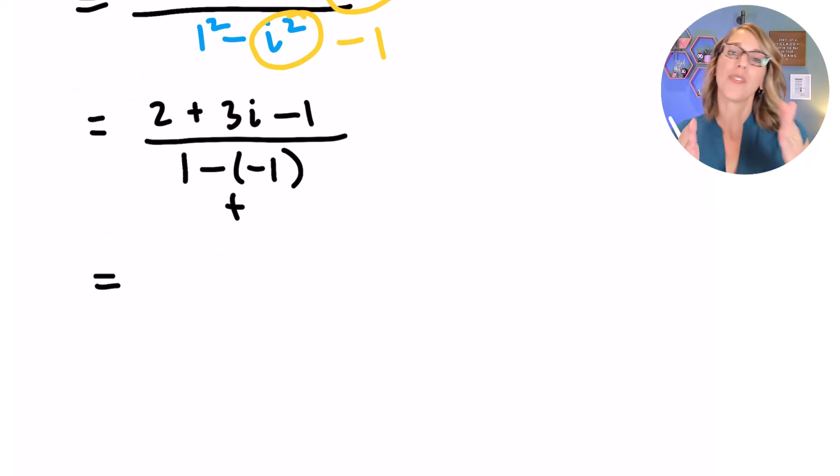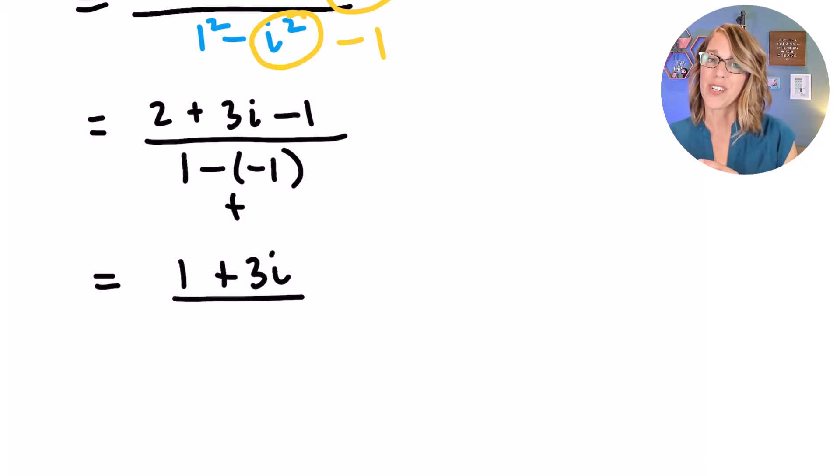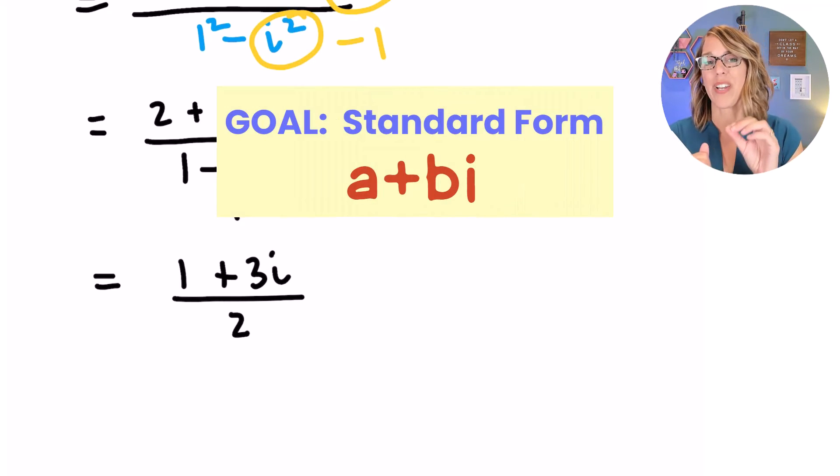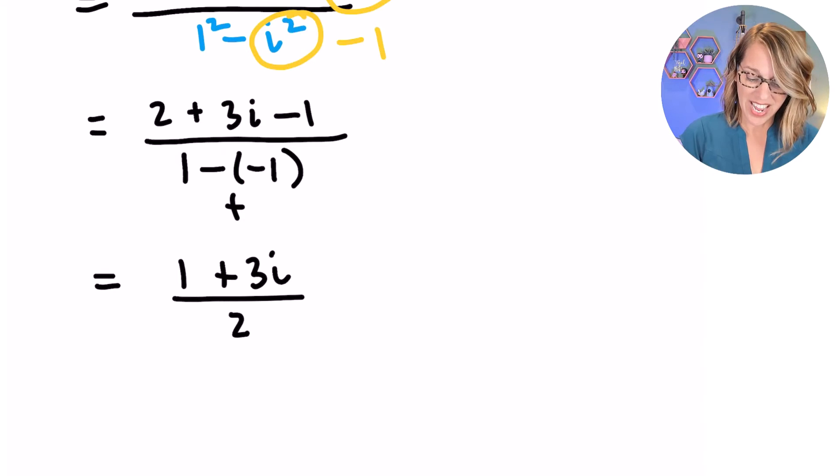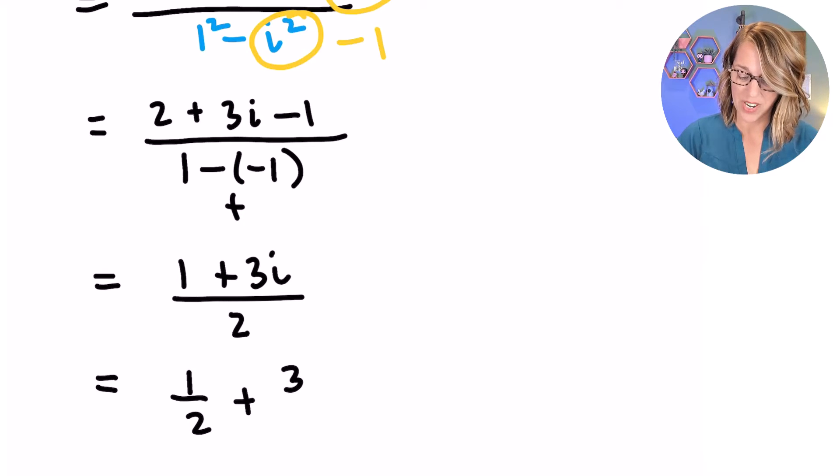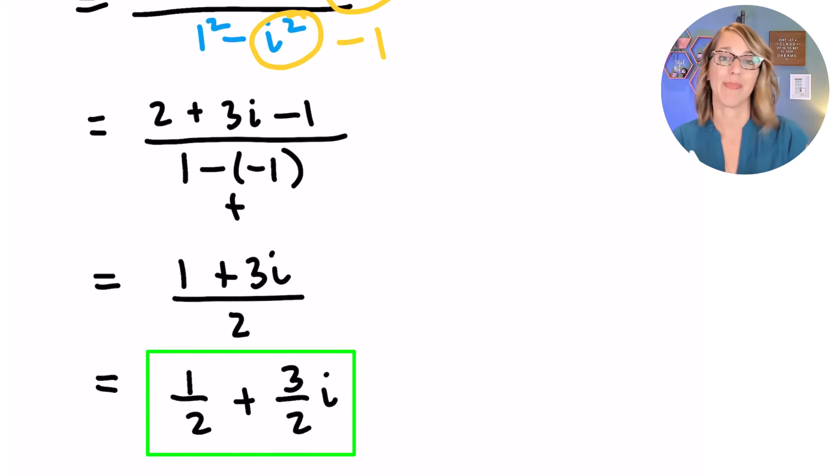In that numerator, I'm going to put the real part first, so not the imaginary term. I want the 2 minus 1 first, which is equal to 1, and I've got that plus 3I. In the denominator, it's really 1 plus 1, and 1 plus 1 equals 2. Now I want this in standard form, so I want A plus BI. I'm going to divide both of those terms by my 2, and I end up with my answer of 1 over 2 plus 3 over 2 times I.